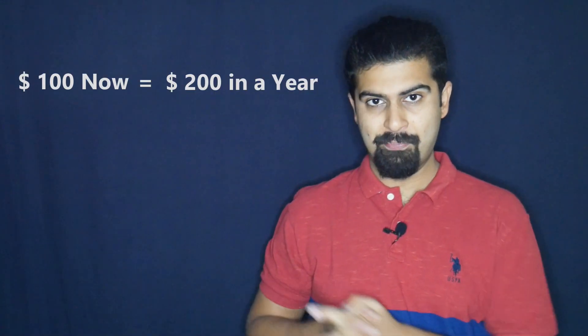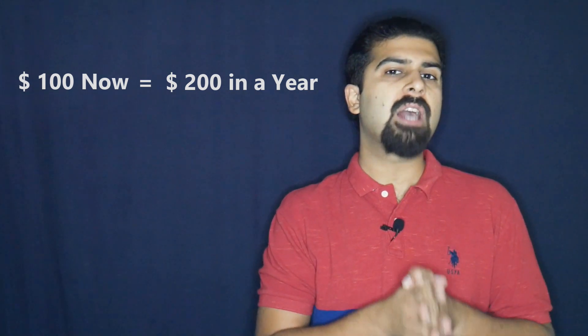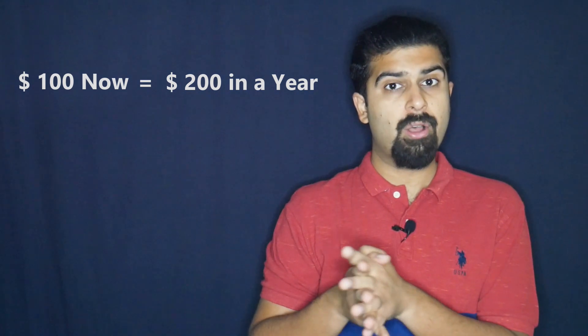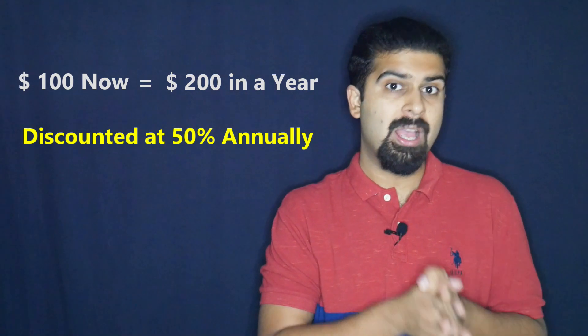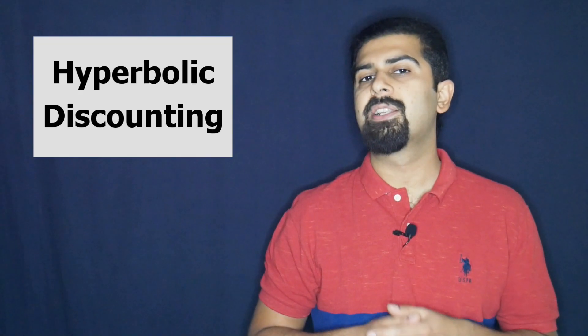Economists have traditionally represented this tendency in terms of discounting. For example, we may prefer $100 today over $200 in a year. In this case, we are discounting the delayed reward of $200 at 50% annually by valuing it as much as $100 today.